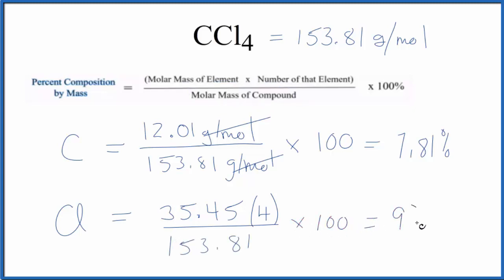We get 92.19%. These numbers should add up pretty close to 100, very close. Might not be exact as the periodic table only rounds to two decimal points.